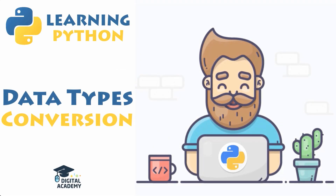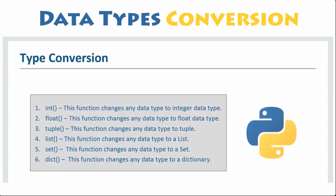Conversion between data types. In Python, data types are used to classify one particular type of data, determining the values that you can assign to the type and the operations you can perform on it.